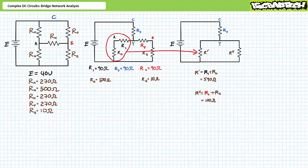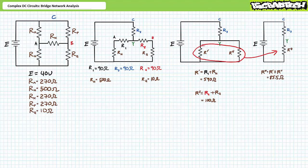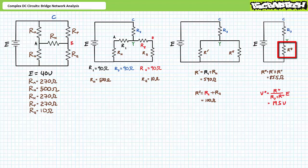R1 and RN are in series, a simplification called R-single-prime with a value of 590 ohms. Similarly, R2 and RQ are in series, called R-double-prime with a value of 100 ohms. Note that at this simplification level we've lost access to nodes A and B — node A is internal to R-single-prime and node B is internal to R-double-prime. R-single-prime and R-double-prime are in parallel, giving R-triple-prime of 85.8 ohms. R-triple-prime is in series with Y resistor R3, setting up the voltage divider rule. Applying the voltage divider rule, V-triple-prime is roughly 19.5 volts, and since elements in parallel share the same voltage, V-single-prime equals V-double-prime equals roughly 19.5 volts.